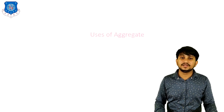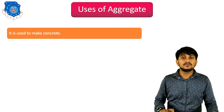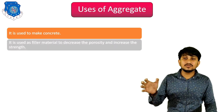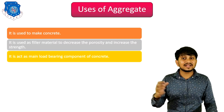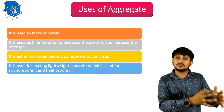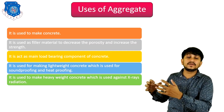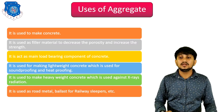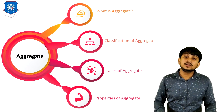Uses of aggregate: it is used to make concrete by mixing aggregates with cement and water. It is used as filler material to decrease porosity and increase strength. It acts as the main load-bearing component of concrete. It is used for making lightweight concrete, which is used for sound insulation or heat proofing. It is used to make heavyweight concrete, which is used as radiation shielding in laboratories and nuclear power plants. It is also used as road metal, ballast, or railway sleepers.